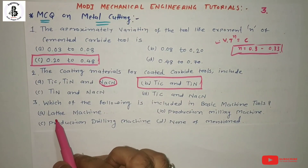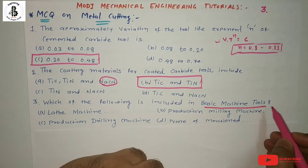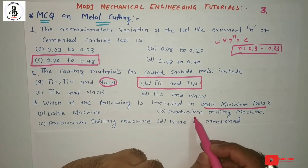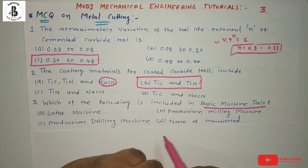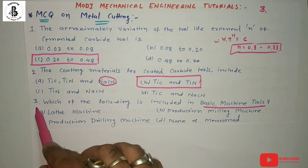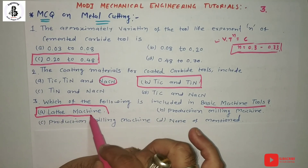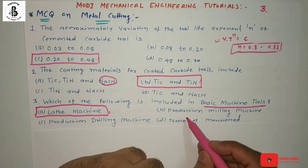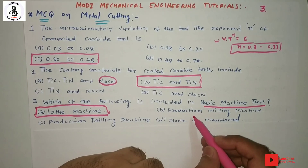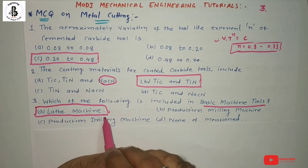Question 3: which of the following is included in basic machine tools? Options: A) lathe machine, B) production milling machine, C) production drilling machine, D) none of the above. The basic machine tool is the lathe machine. Production milling and production drilling machines are considered special purpose machines. So for basic machine tools, the answer is A, lathe machine.